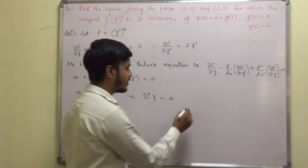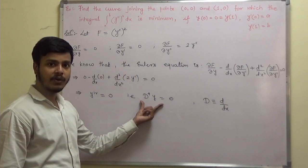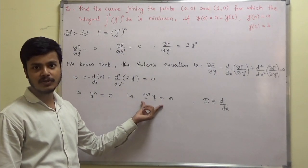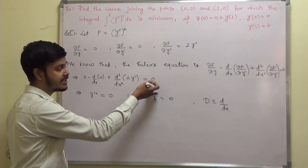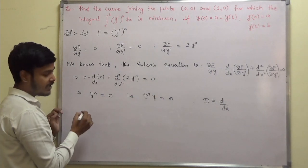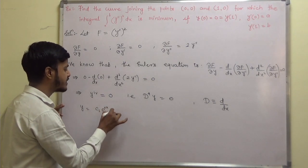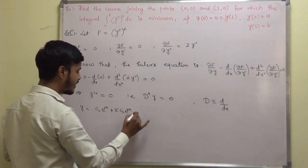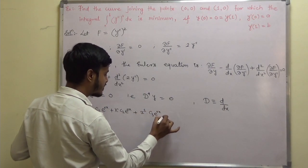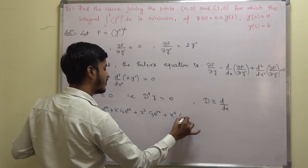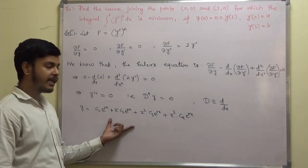We have two options. The first option is to find the roots: the auxiliary equation gives roots 0, 0, 0, 0 (four times). Since the right-hand side is 0, the complementary function gives the solution: y = c₁e^(0·x) + x·c₂e^(0·x) + x²·c₃e^(0·x) + x³·c₄e^(0·x).